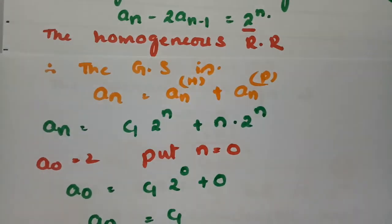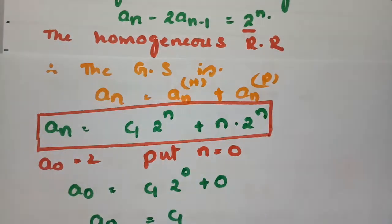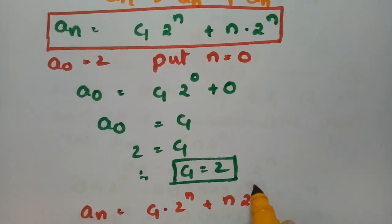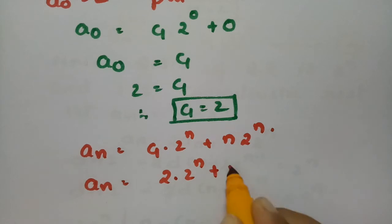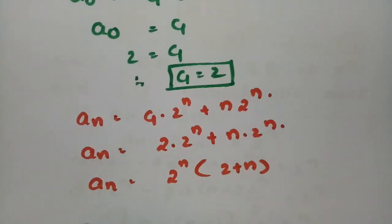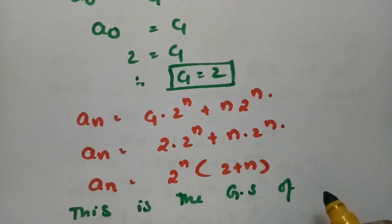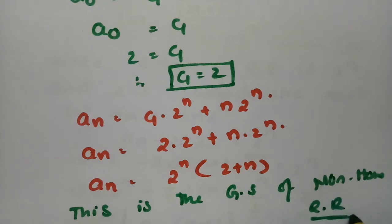Substituting c₁ = 2 back into the general solution: aₙ = 2·2ⁿ + n·2ⁿ. Taking 2ⁿ common: aₙ = 2ⁿ(n + 2). This is the general solution of the given non-homogeneous recurrence relation.